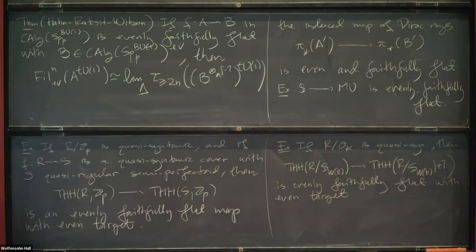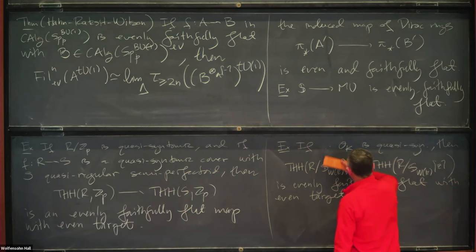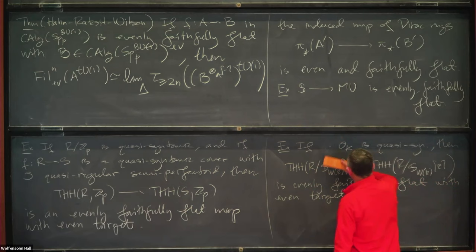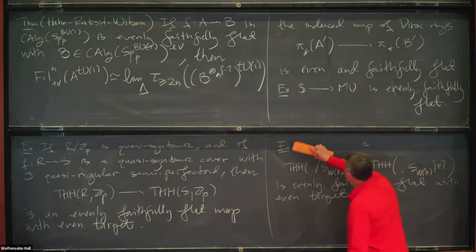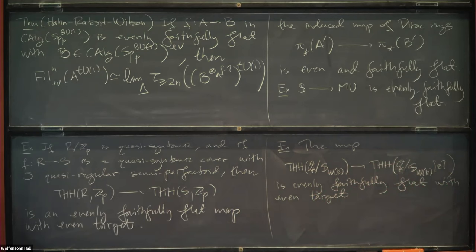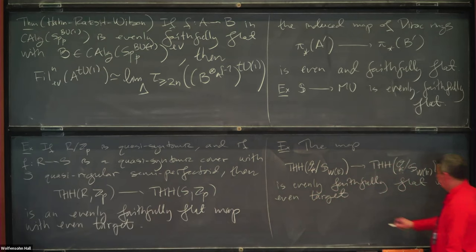And so now. And, Han, Ruxet, Wilson prove that if S in here is evenly, faithfully flat, then the even filtration of the U1-Tate spectrum of A is calculated by the Čech complex off, like this. Okay.